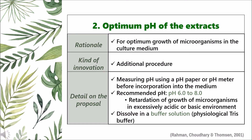Second is checking the optimum pH of the extracts. The rationale is to allow optimum growth of microorganisms in the culture medium. The pH of the sample extracts must be checked using a pH paper or a pH meter before incorporation into the medium. Raman Chowdhury and Thompson stated that the growth of microorganisms may be retarded in environments which are excessively acidic or basic. The advisable pH is around the neutral range, around pH 6 to 8. Alternatively, the extracts can be dissolved in a buffer solution like the physiological Tris buffer.